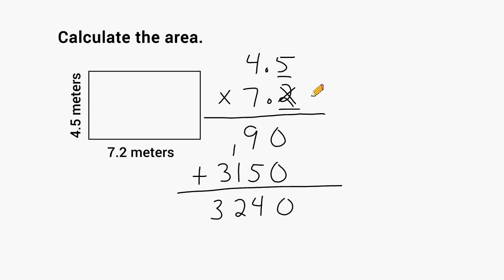We have two total place values after all of our decimals, so the same must be true in our answer. Starting from the end, we skip over one, two place values, and then we write our decimal in that position. So the area of this rectangle is equal to 32 and 4 tenths square meters.